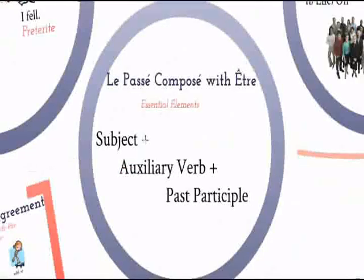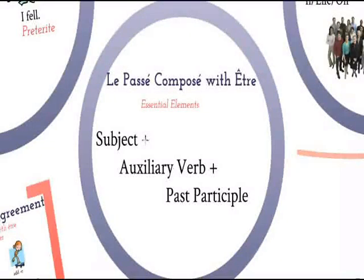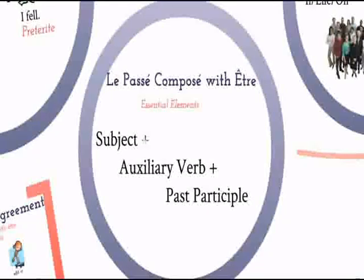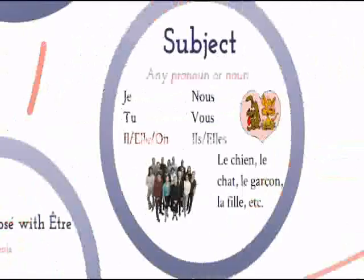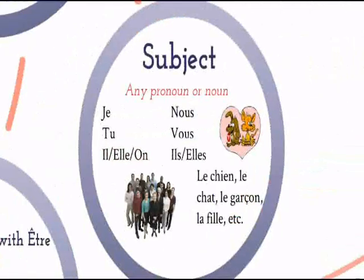To form the passé composé, each clause must include a subject, auxiliary verb, and past participle. The subject is any subject — pronoun or noun. Here are some examples.